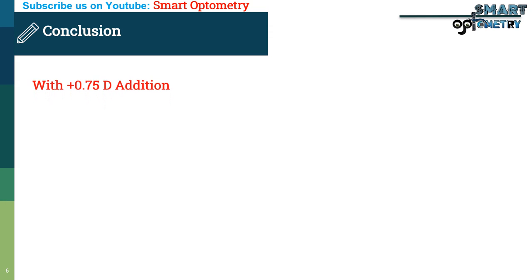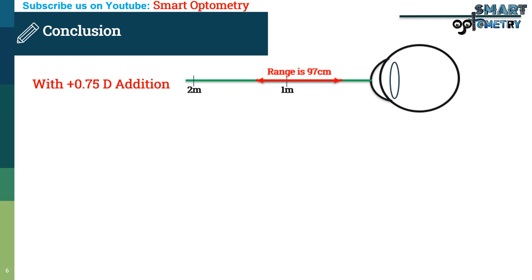As we have seen with plus 0.75 diopter addition power, range of near work is 97 cm, which is quite good, approximately 1 meter. In this range, patient can do his or her near work comfortably. Even he or she can do intermediate distance work like using computer.